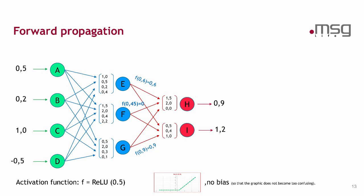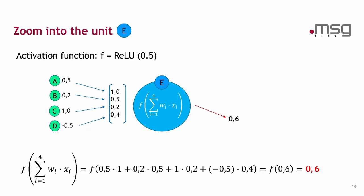But stop, what have I done in detail? That was too fast. Let's have a deeper look into a special unit, for example the unit E. What have I calculated within the unit E? There I have the four input neurons A, B, C and D and I have the four weights for the connections between the input units and the unit E.